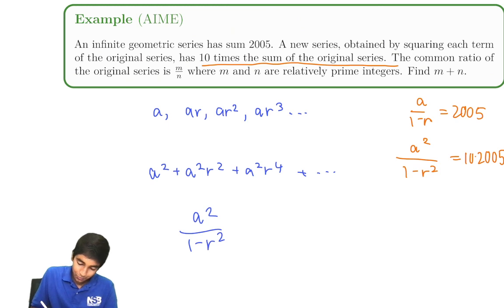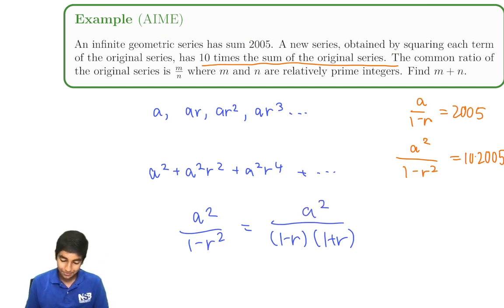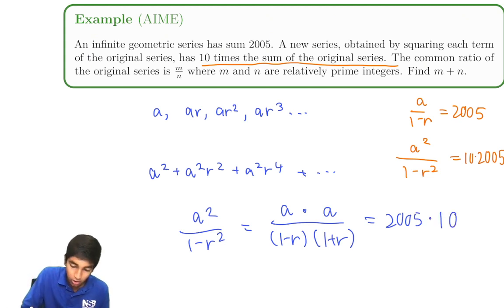a squared over 1 minus r squared. 1 minus r squared is 1 minus r times 1 plus r, and that's a squared on top. So we can separate this and write it as a over 1 minus r times a over 1 plus r. We already know a over 1 minus r. That's 2005. And we know that this whole thing equals 2005 times 10. So this part is 2005. Therefore, this part over here must be 10.